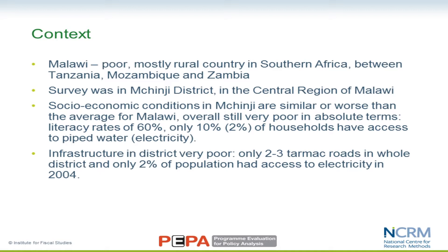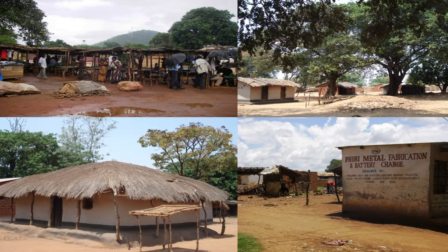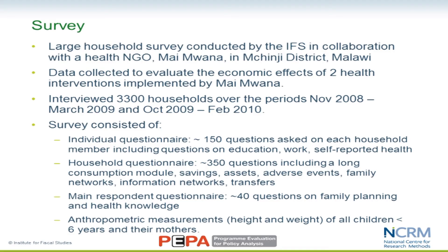Infrastructure in the district is very poor — there are only about two or three tarmac roads in the whole district, and only 2% of households have access to electricity. Here's where Mchenji district is within Malawi, which is a very long country. A few pictures show the conditions there.